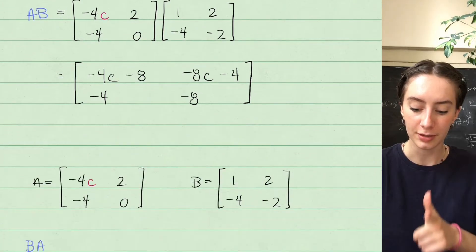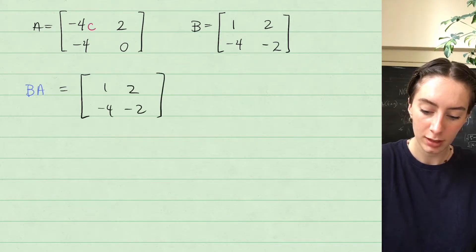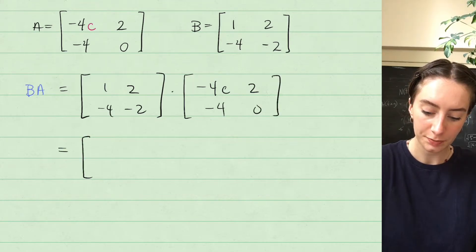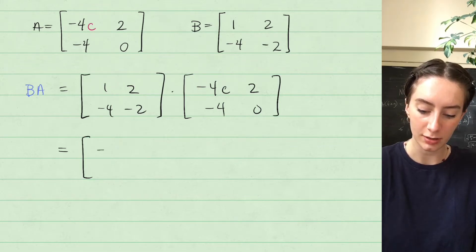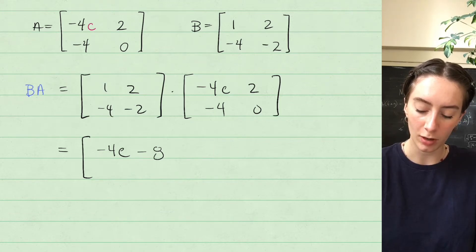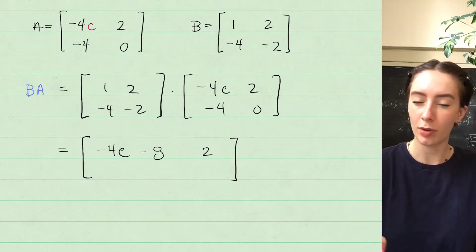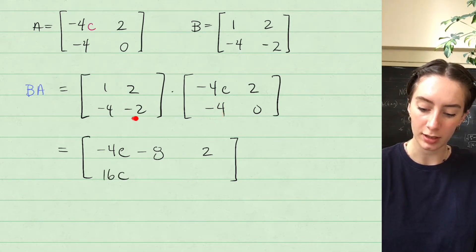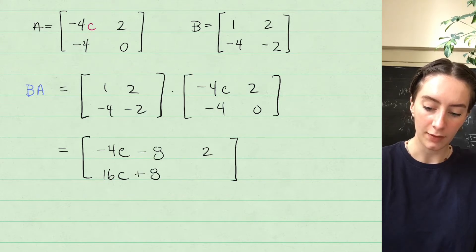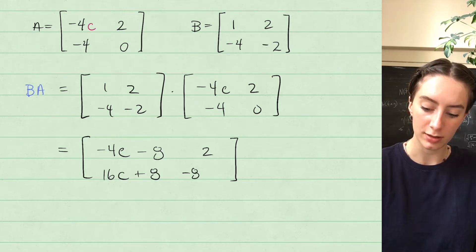Now we find matrix BA, multiplying in reverse order — B times A. The top-left entry is 1 times negative 4C plus 2 times negative 4, giving negative 4C minus 8. The top-right entry is 1 times 2 plus 2 times 0, giving 2. The bottom-left entry is negative 4 times negative 4C plus negative 2 times negative 4, giving 16C plus 8. The bottom-right entry is negative 4 times 2 plus negative 2 times 0, giving negative 8.